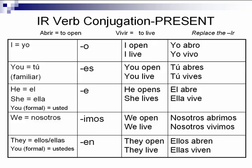This is how you conjugate most IR verbs. There are, however, some irregular verbs, and we'll cover those later. For this exercise we're going to use abrir, to open, and vivir, to live. You replace the IR and add the appropriate ending. So to say I live, you say yo vivo — you take off the IR and add o.